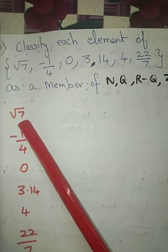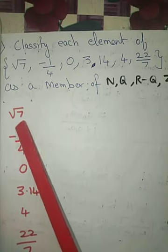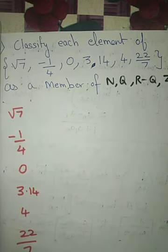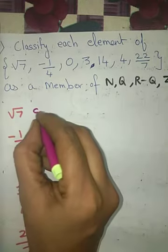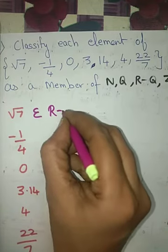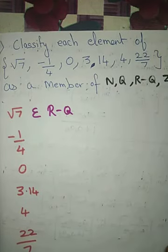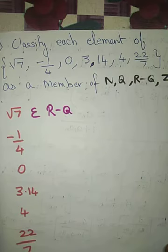Let us look at root 7. Whenever you have a root sign, it is an irrational number. So root 7 belongs to irrational numbers, denoted by R minus Q.